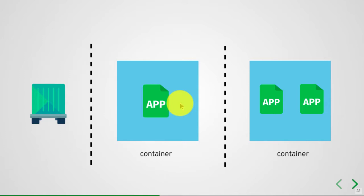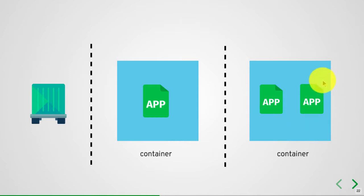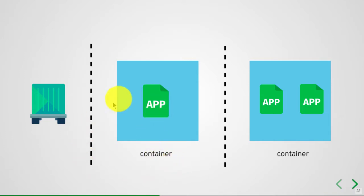There are certain situations when you want to run more than one application together on the same host, and there is no way you can do that on different hosts. You might think: why don't I put them in one container image and run them together? That is typically an anti-pattern in container deployments, because Docker has been created specifically for running one application in one container. Docker attaches to the application's standard out — that's how it fetches logs.